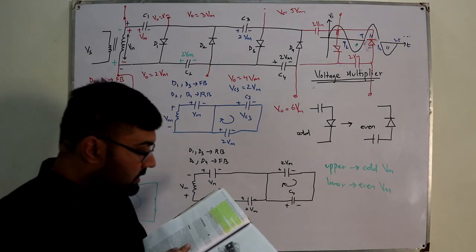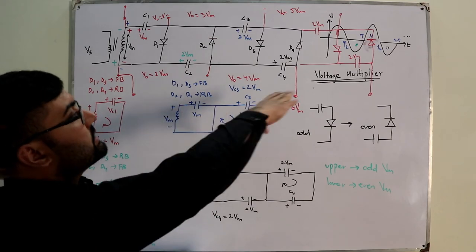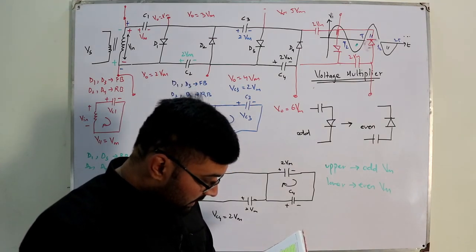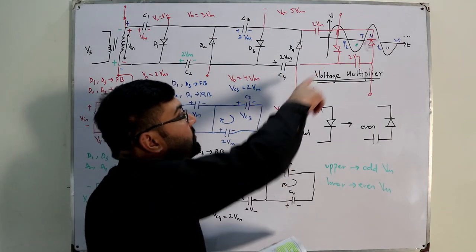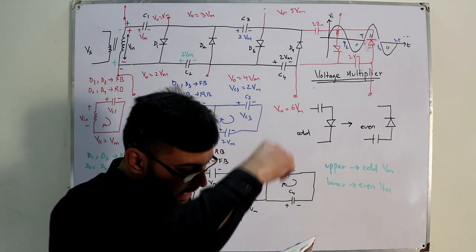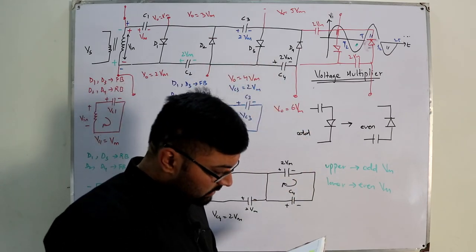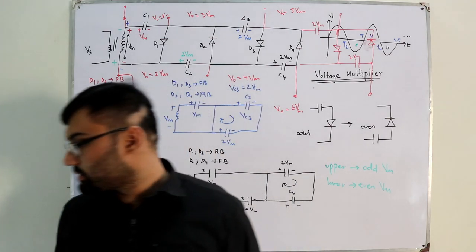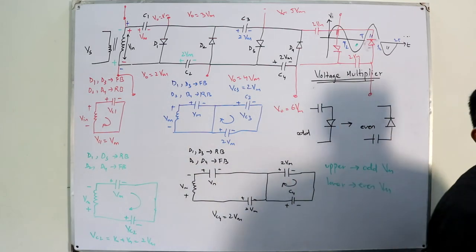Checking the book: the transformer rating is only VM — the transformer provides a peak value of VM — but you can step it up as much as you like to 2VM, 3VM, 4VM, and so on. If additional sections of diode and capacitor are used, each capacitor will be charged to 2VM. Measuring from the top of the transformer winding provides odd multiples of VM; measuring from the bottom provides even multiples of VM. The maximum diode voltage is 2VM.